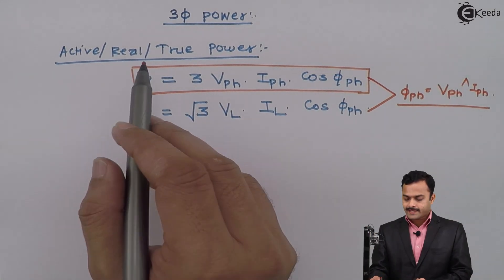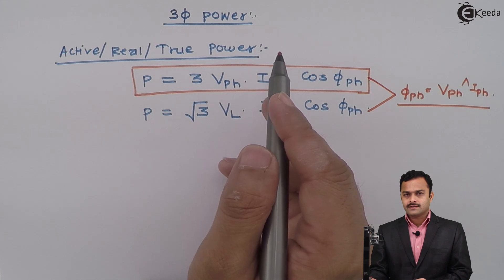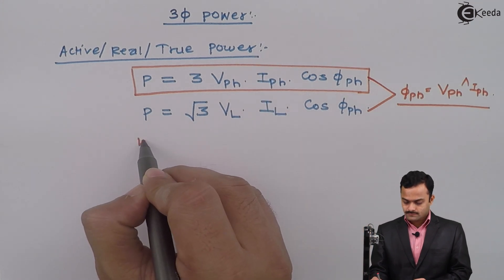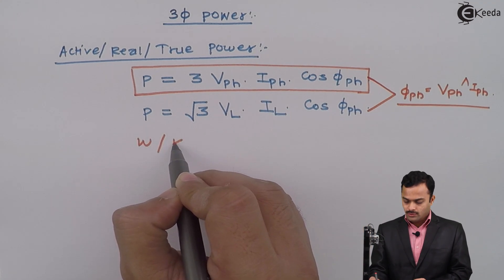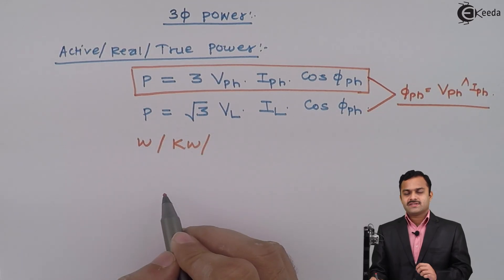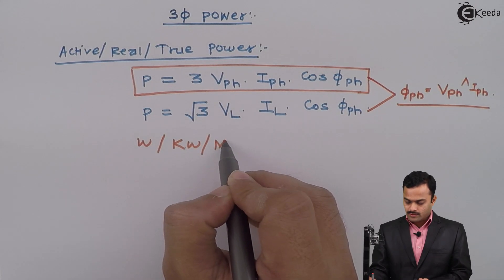The unit of active, real or true power is Watt or Kilowatt or sometimes we go higher unit that is Megawatt.